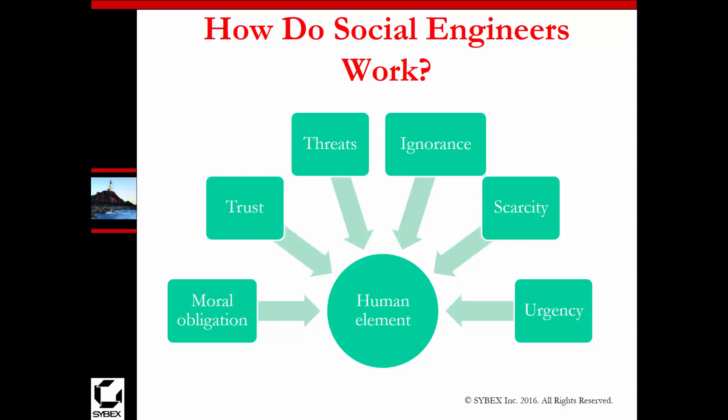Moral obligation, trust, ignorance, threats — there are lots of different ways that tie directly into the human aspect of things. You could kidnap a bank manager's family, and that could be a threat: do this or I'll hurt your family. When you actually kidnap their family, it makes the threat even more real. Or trust — hey, your partner needs you to go do this for me. Same thing for moral obligation. All of these are aspects of social engineering, and some people have actually developed these skills.